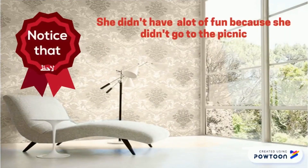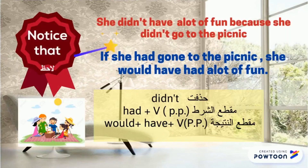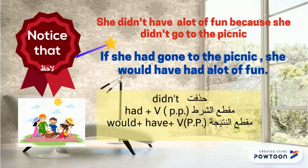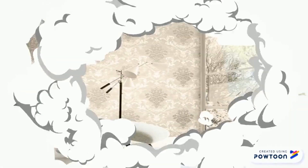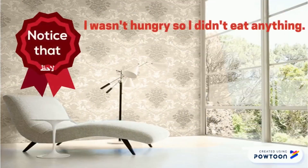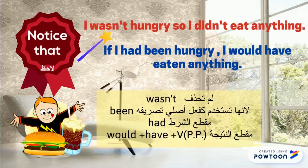Notice that we have to omit 'didn't' and then use this form. On the other hand, we can't omit the word 'wasn't' because it has another tense.